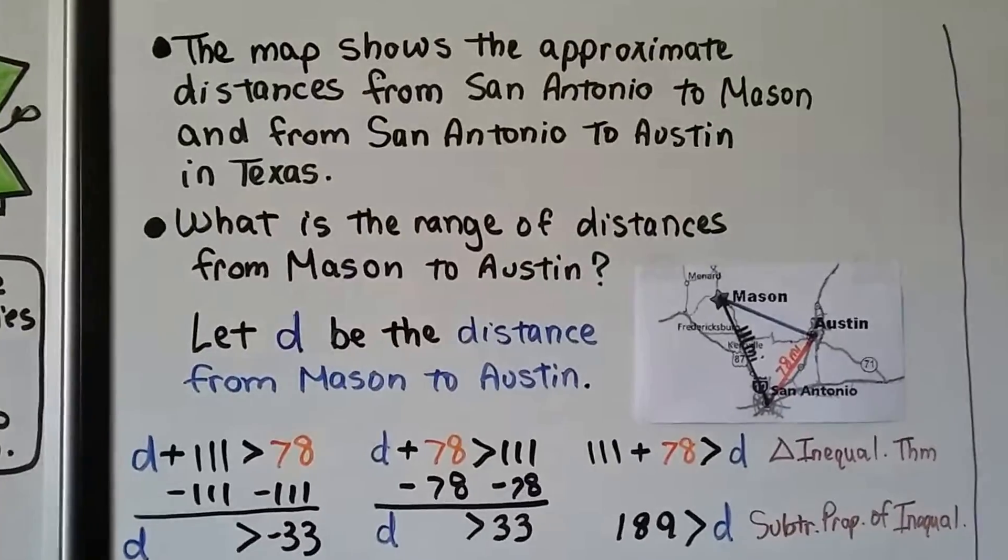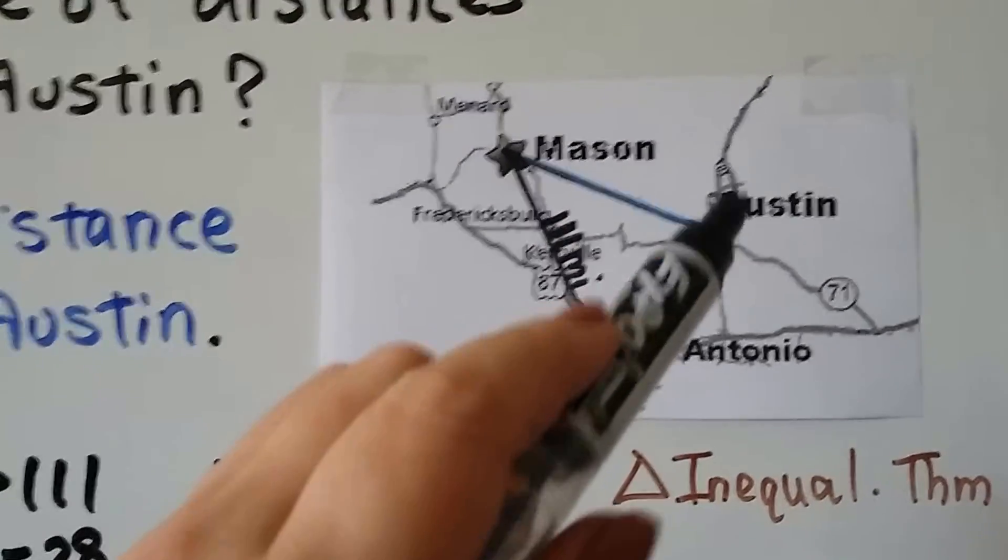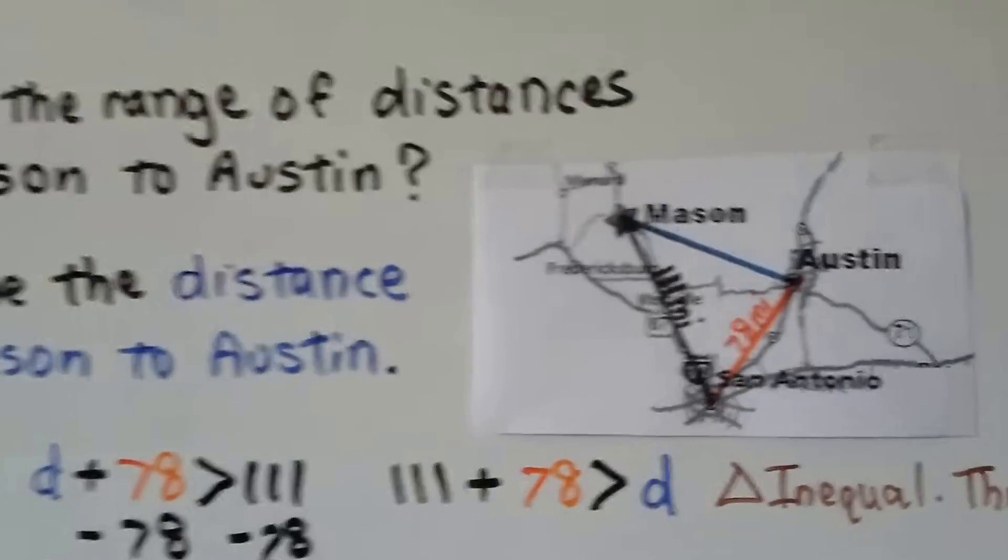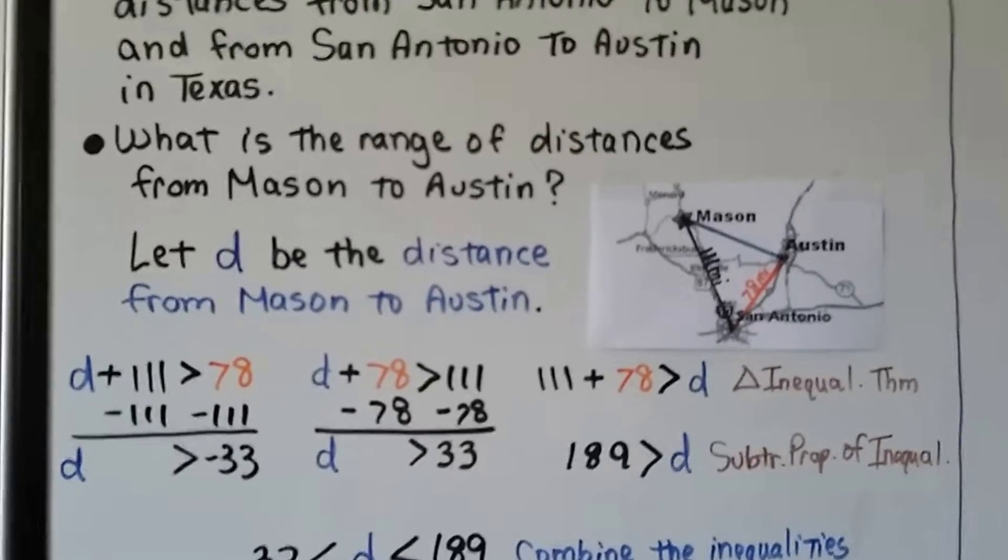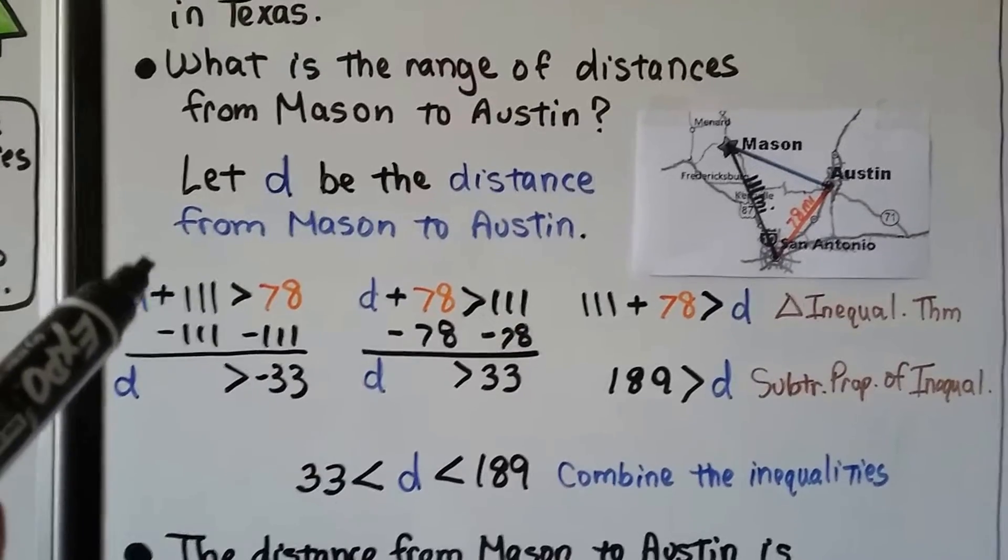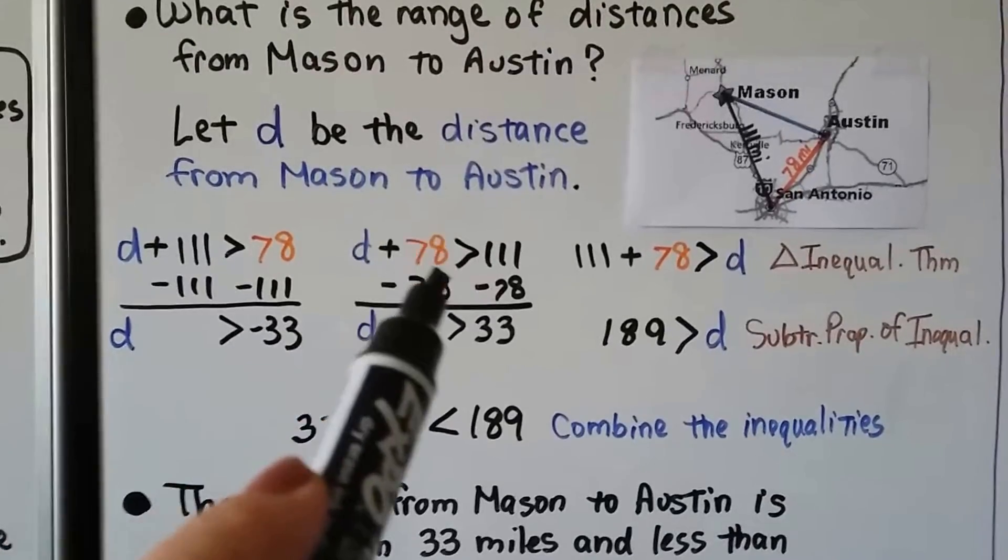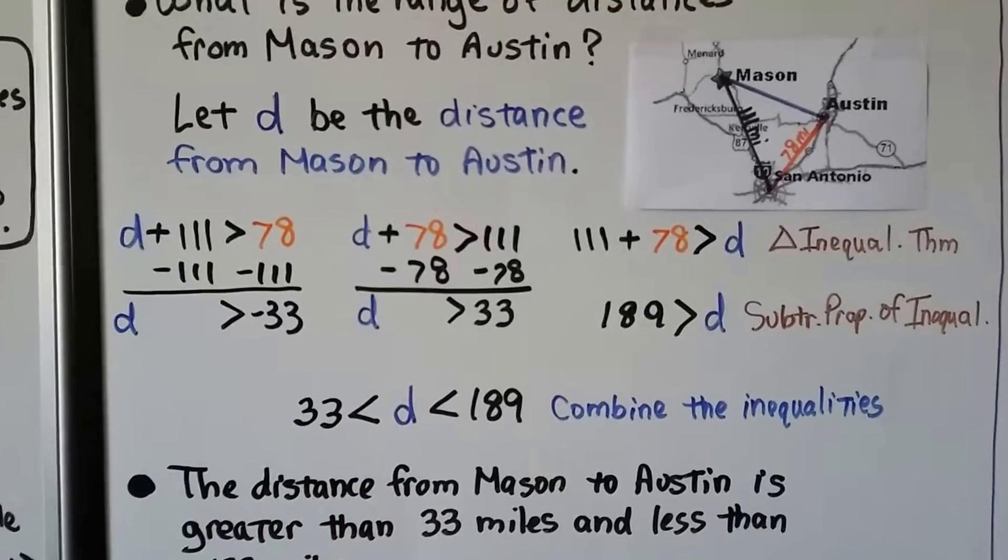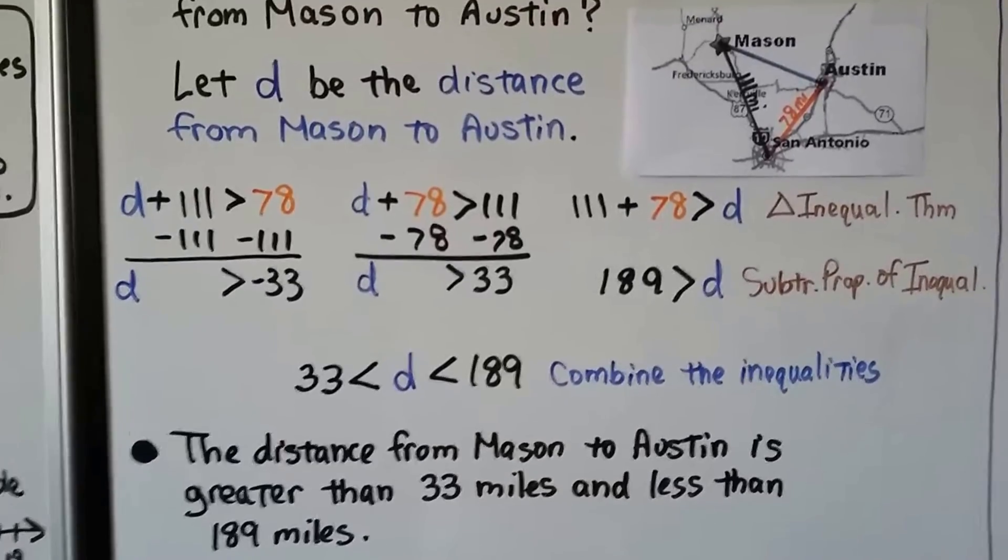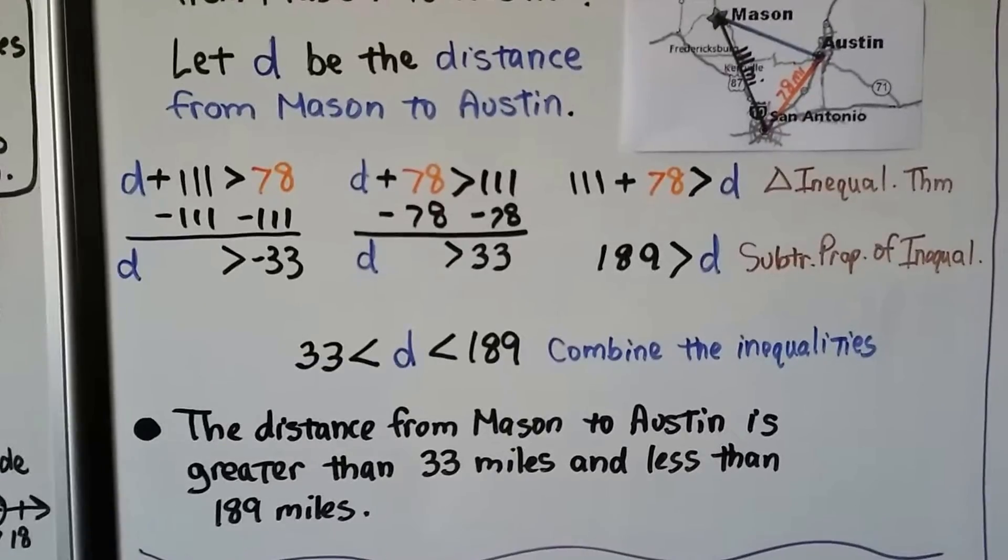This map shows the approximate distances from San Antonio to Mason and from San Antonio to Austin in Texas. It goes from San Antonio to Austin and San Antonio to Mason. This is 111 miles, this is 78 miles. We don't have any distance for this blue one from Mason to Austin. What is the range of distances from Mason to Austin? We let D be the distance from Mason to Austin. Using the triangle inequality theorem, D plus 111 is greater than 78, subtract 111, we get D is greater than negative 33. D plus 78 is greater than 111, subtract 78, D is greater than 33. And 111 plus 78 is 189, greater than D. We combine the inequalities: D is greater than 33 and less than 189. So the distance from Mason to Austin is greater than 33 miles and less than 189 miles.